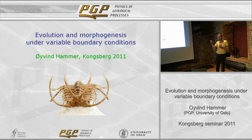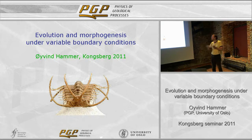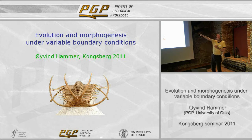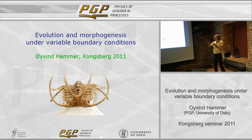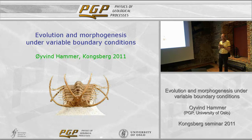Pyrrhan asked me to write a book, and he gave me the subject - this is not my title: 'Evolution and morphogenesis under variable boundary conditions.' So I tried to figure out what he meant by that.